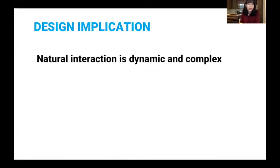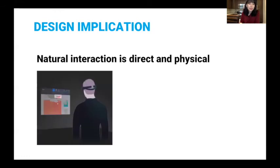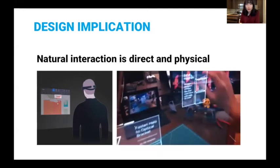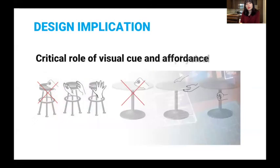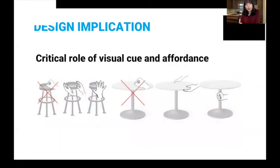And natural interaction is more direct and physical, meaning that for objects that are far away from the user, users much prefer to use an interaction where they can manipulate those directly, compared to the cases where they have to use a mid-air gesture. Our study also points out the critical role of visual cues and affordance. Although these are heavily discussed topics in HCI and 3D UI research, not many VR applications really apply the concept of visual affordance into the designing of 3D UI.